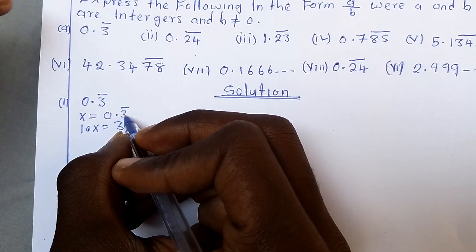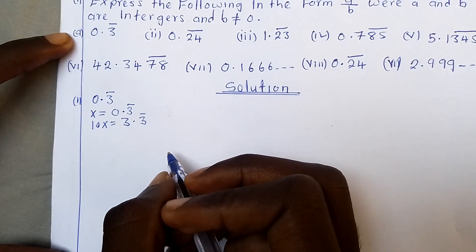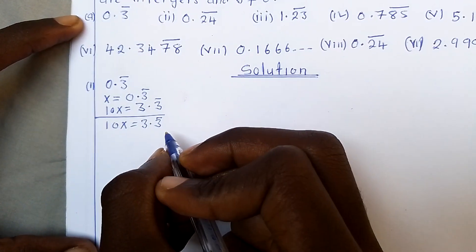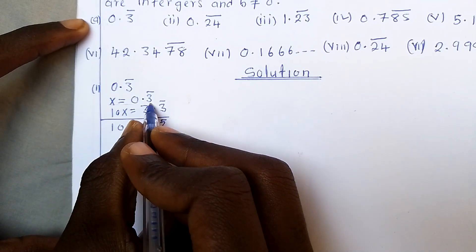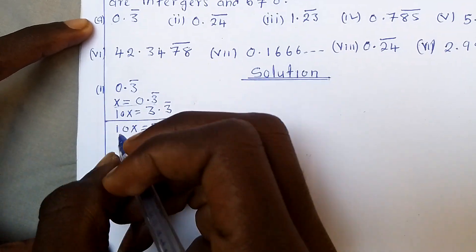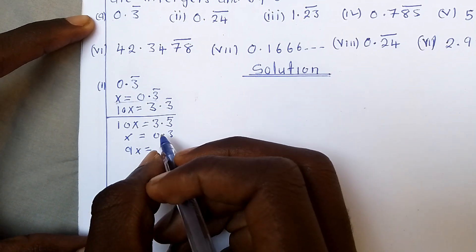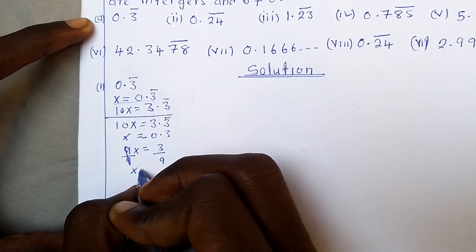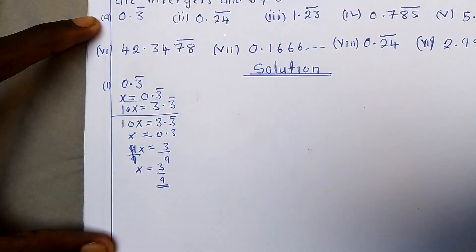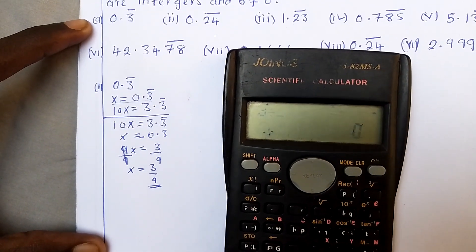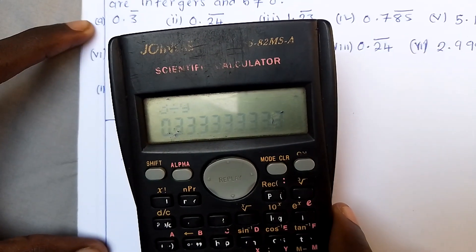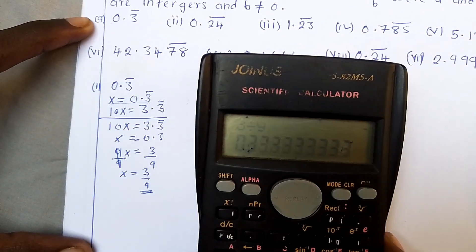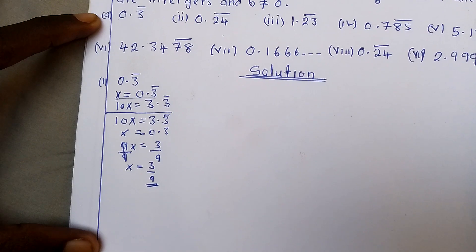Since we know that this number is repeating itself, we are going to have another 3 here with a bar. So we can say 10X equals 3.3 bar. Then we subtract the original equation: 10X minus X gives 9X equal to 3.3 bar minus 0.3 bar, which equals 3. So X equals 3 over 9. If you get your calculator and say 3 divided by 9, you discover it gives you a repeating decimal. This is proof that what we have done is correct, though you are not allowed to use a calculator.